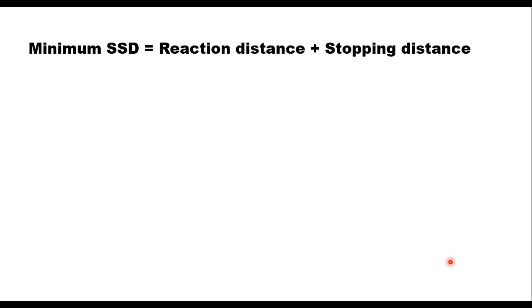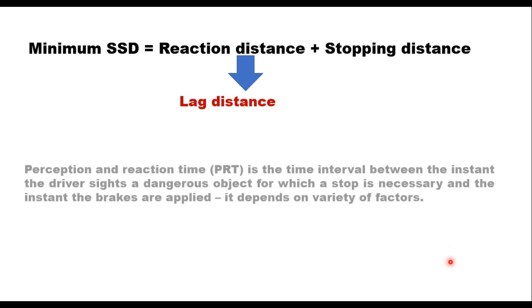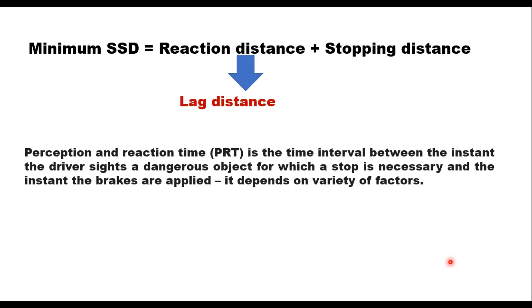Stopping sight distance equals lag distance (reaction distance) plus braking distance. The perception reaction time is important because the lag distance depends on how much time the driver takes to act after seeing the object. PRT — Perception Reaction Time — is the time interval between the instant the driver sights a dangerous object for which a stop is necessary and the instant the brakes are applied. It depends upon the driver's age, experience in driving, and many more factors.